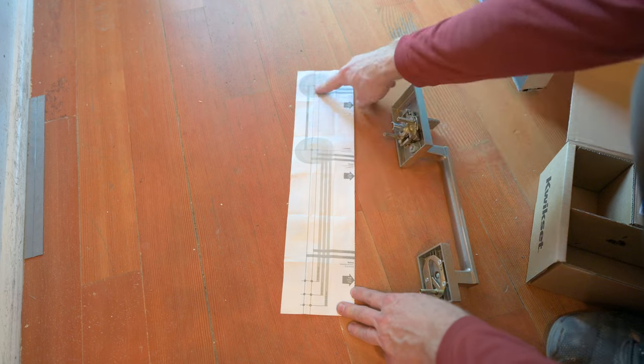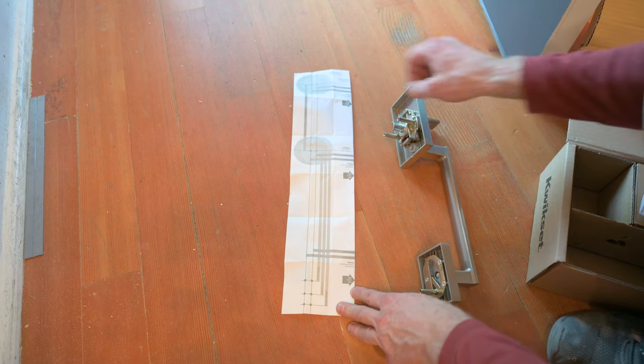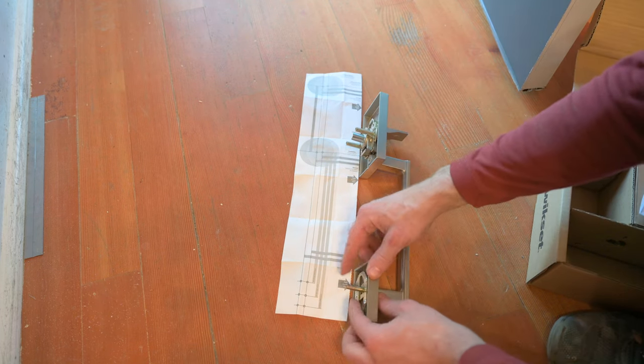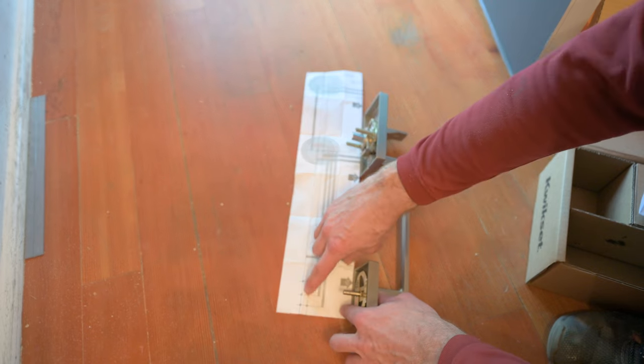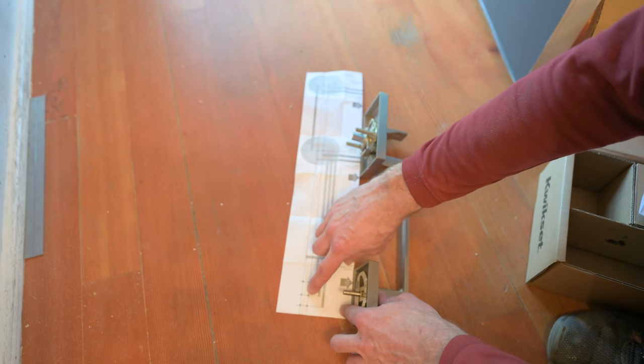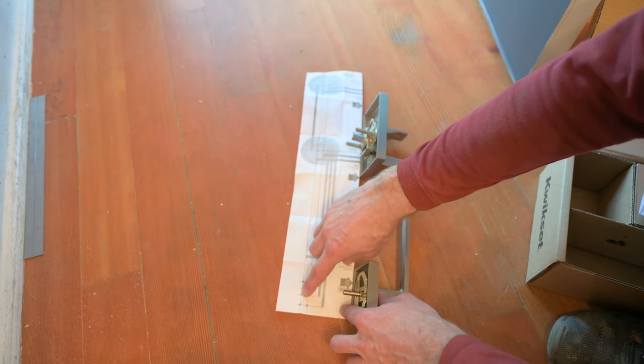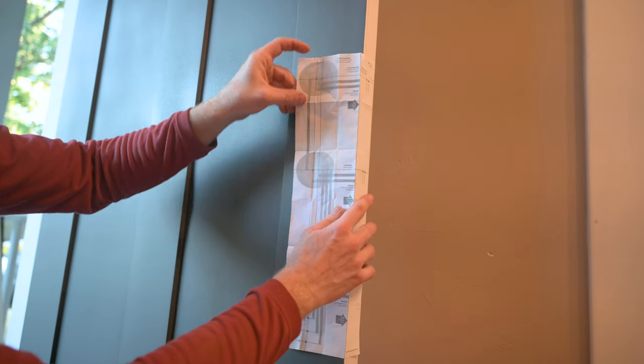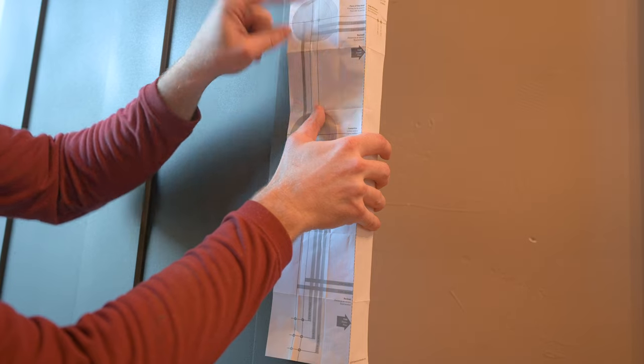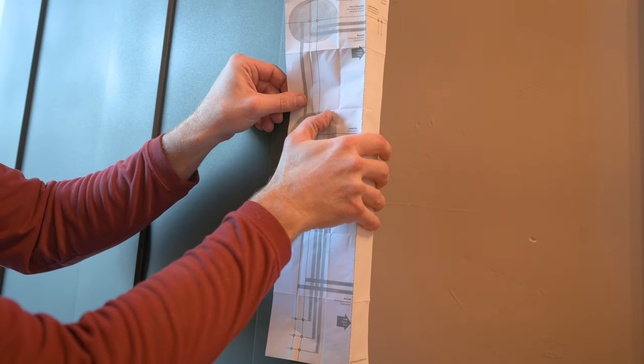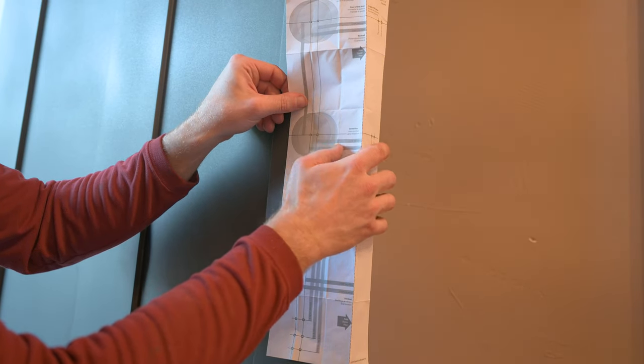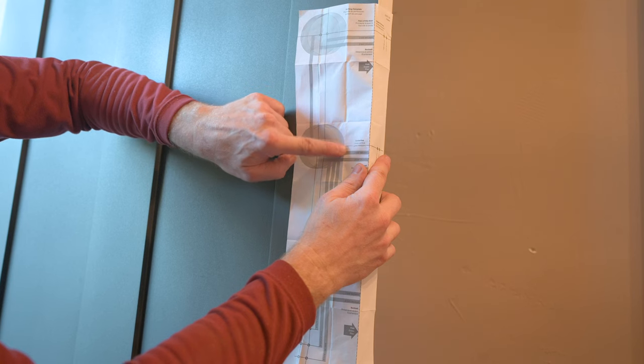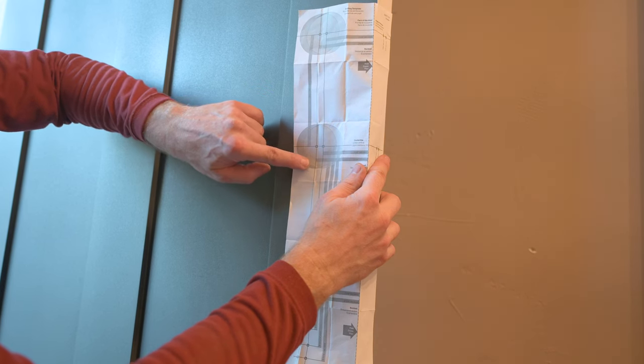On the template, you can see the deadbolt hole. And this is where the handle set is going to go. And for this handle, it tells us to drill the lower mounting hole in one of these two locations, depending on how it lines up with the hole in the door above. Now line up the fold on the template along the edge of the door and feel for the hole through the template and move it around as necessary and figure out if it's the left circle or the right circle that it's lining up with.